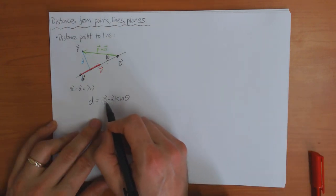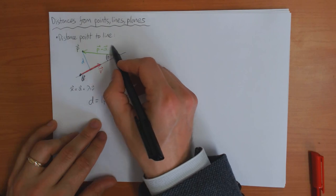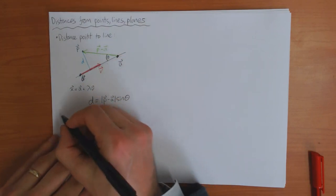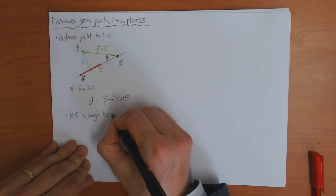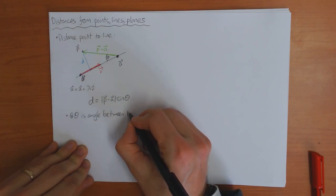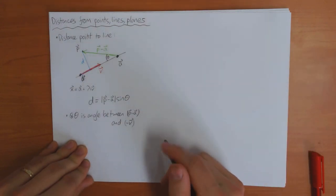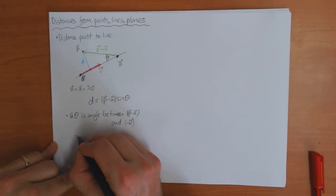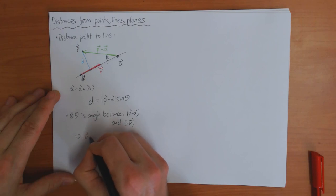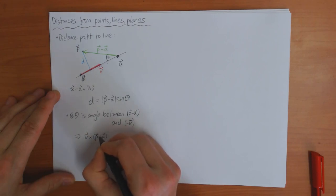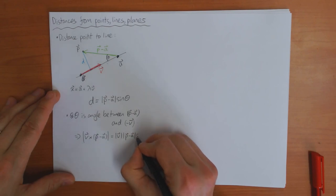So what is the angle theta? The angle theta is the angle between this vector and the line, so that's the angle between this vector and the vector V. Theta is the angle between the vector P − A and V — or in this case it's actually −V but it doesn't make any difference. From the formula for the vector product, V × (P − A) = |V| · |P − A| · sin θ.